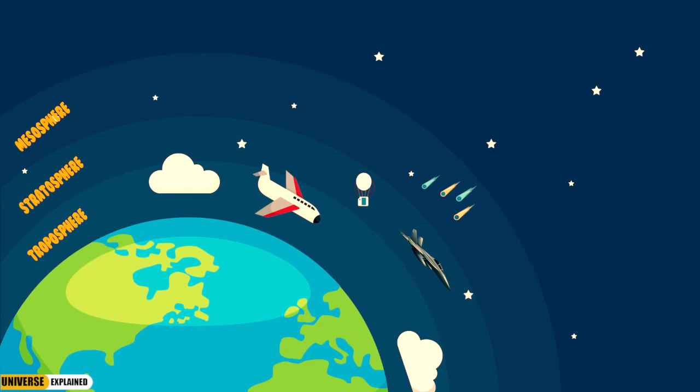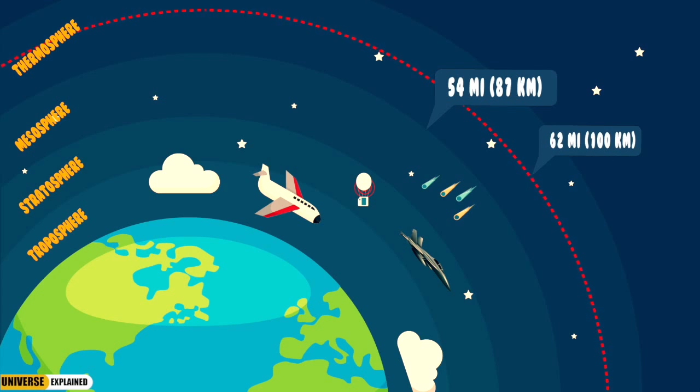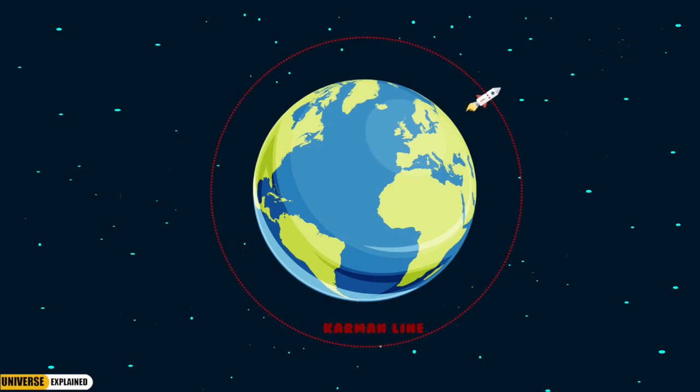At 54 miles we reach the thermosphere. At 62 miles of altitude we reach the Kármán line which commonly represents the boundary between Earth's atmosphere and outer space. The Kármán line is where the speed necessary to maintain altitude is equal to escape velocity.